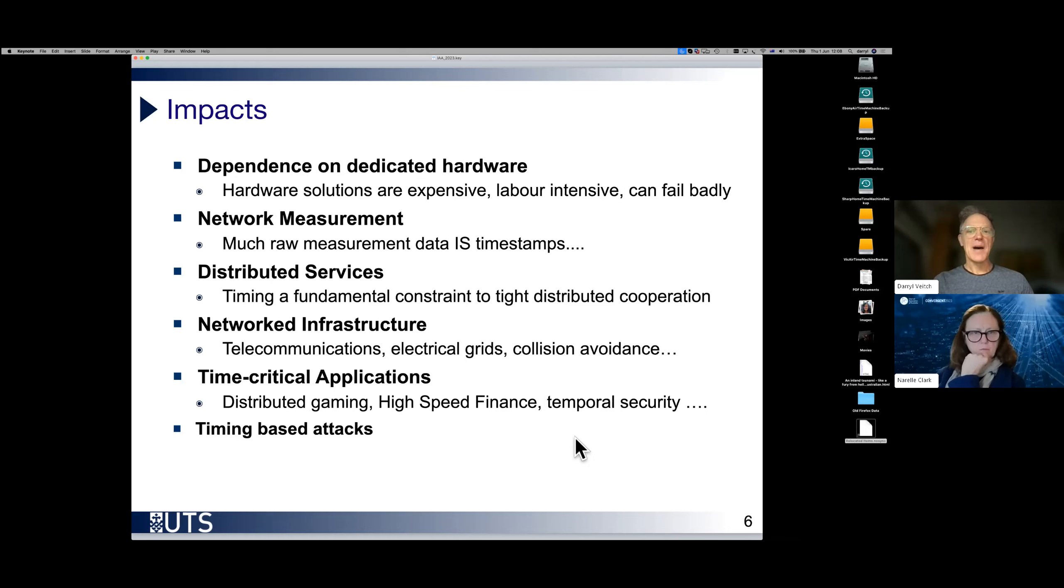Impacts of getting things wrong? For applications where timing is really critical, what is done at the moment is to throw hardware at the problem. Hardware solutions are expensive, labor intensive to put in place. For example, if you want really reliable timing, you need to have GPS receivers that are roof mounted and are well maintained. And if they fail, they can fail catastrophically.